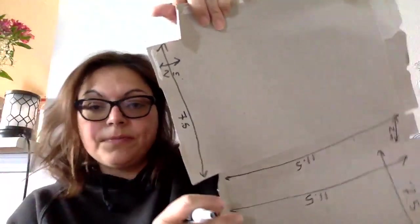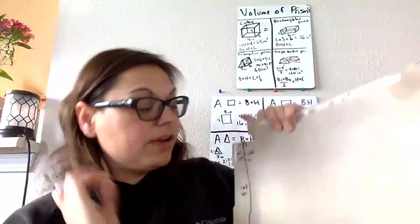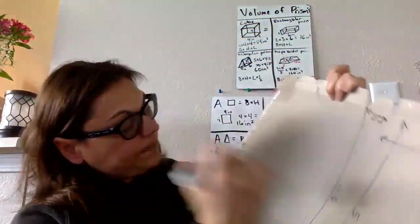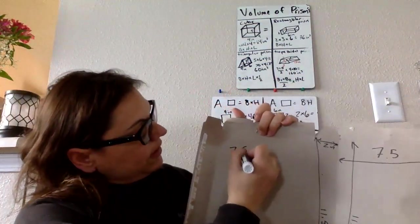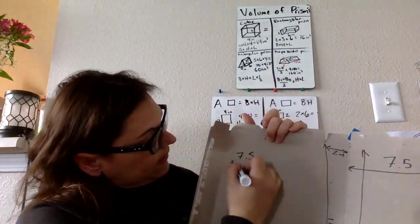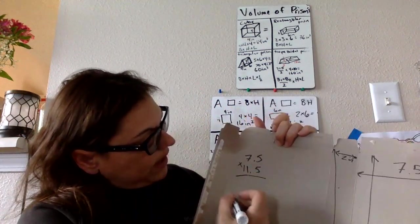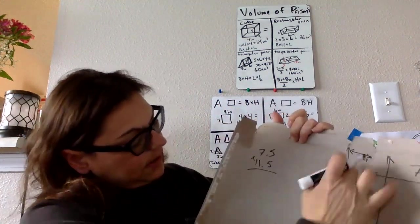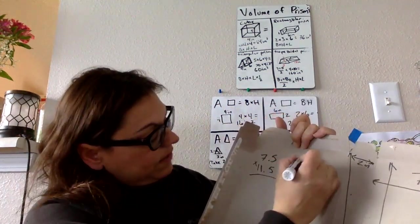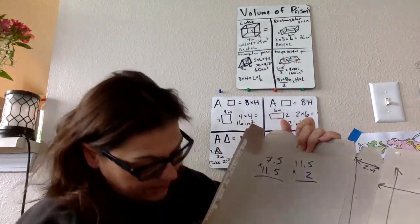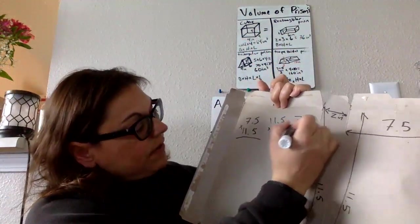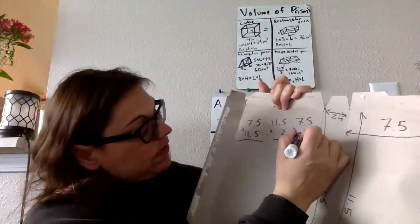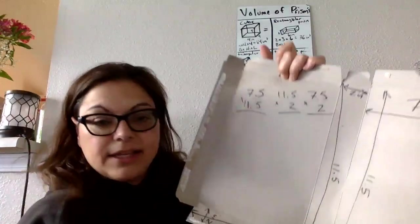That's what I have there. So then I would take all of them and I would multiply my seven and a half times eleven and a half, right, I get that answer. This one here would be eleven and a half times two, get that answer. And the one on the bottom, seven and a half times two and I get that answer.